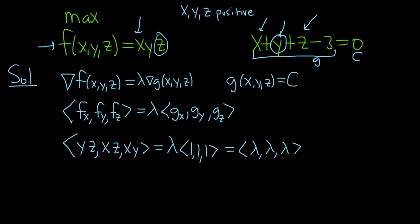So lambda is equal to each of these: we have lambda equals yz, lambda equals xz, lambda equals xy. Since lambda equals all of these, they must all be equal, so yz = xz = xy.